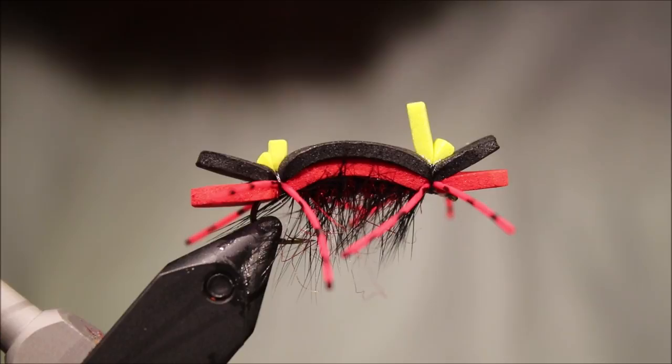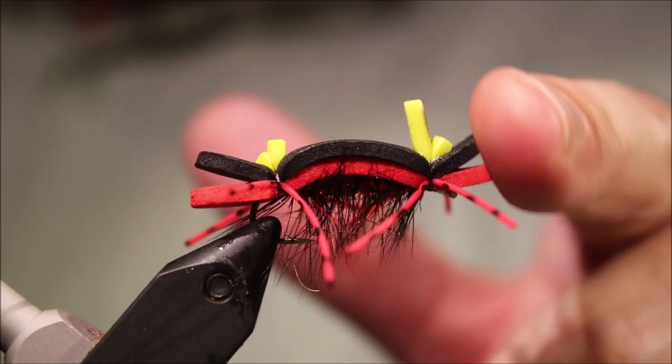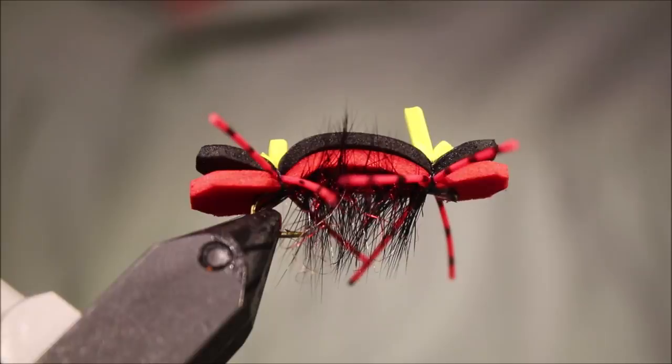Hi everybody, it's Martin at Flick and Feathers again today, and I'm doing another terrestrial fly for you. This is the South Fork Chernobyl Ant, just a variation of the Chernobyl Ant, effective pattern and well worth trying out. You can tie them in various colors to suit yourself.